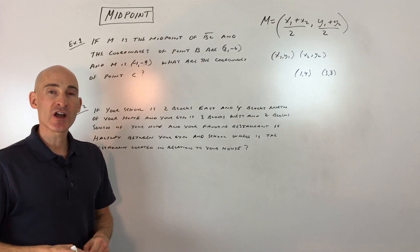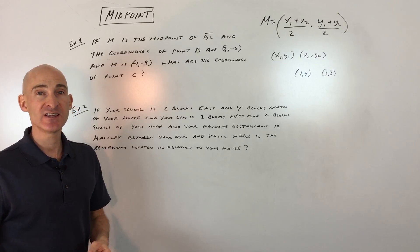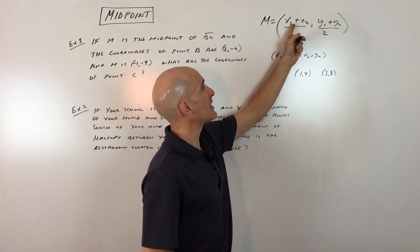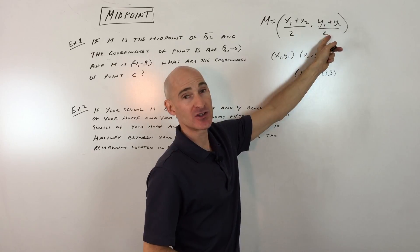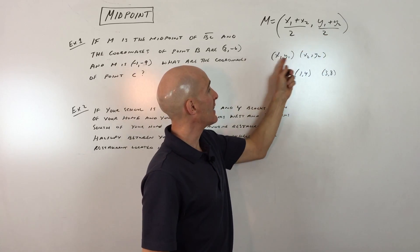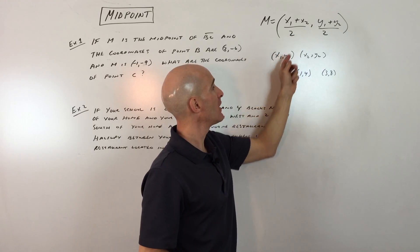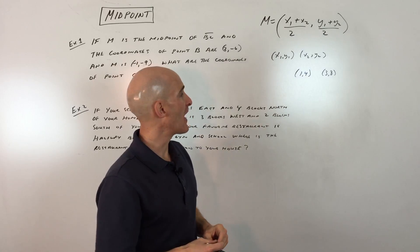In this lesson, we're going to talk about midpoint. Midpoint is definitely something you want to know for the ACT. Let's go over the formula and we'll go through some examples. The midpoint formula is x1 plus x2 divided by 2 and y1 plus y2 divided by 2. It's like an average. You're adding the x coordinates of the two points, the two endpoints, and dividing by 2. Then you're adding the y coordinates of the two points and dividing by 2. That's how you find the middle or the average.